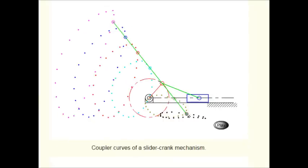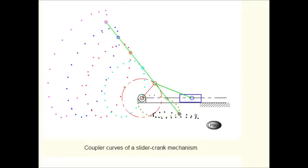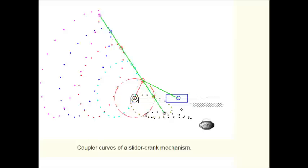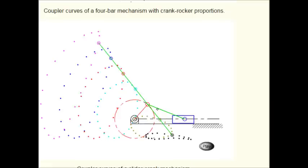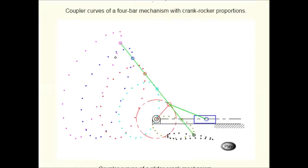or to move something like a hook or a work piece for a machine tool through a certain path. Maybe in a laundromat, you need to hook a hanger, slide it along a rack, pick up another one, slide it along the rack, and so on. So taking the basic slider crank and by extending some of the links, you can get very useful types of motion.